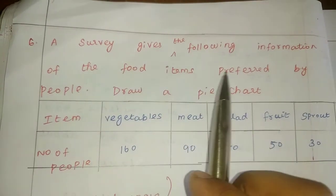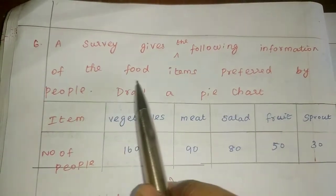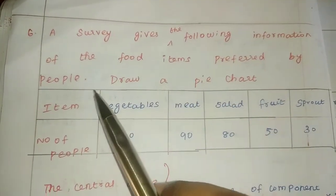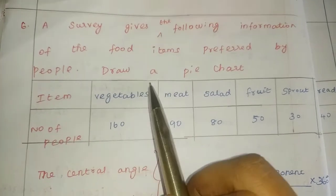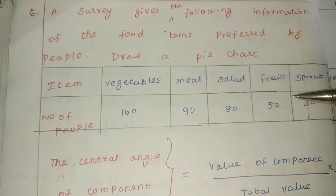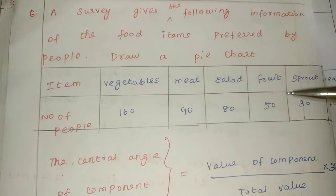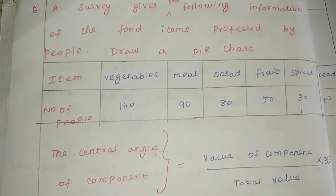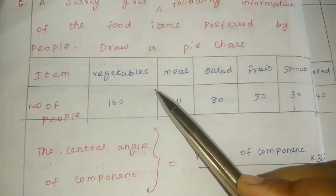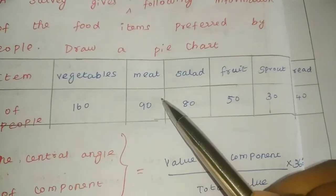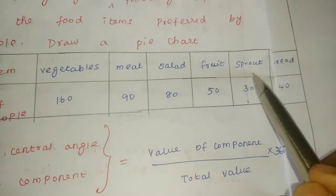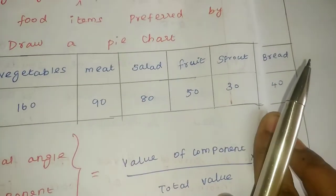A survey gives the following information of the food items preferred by the people. We need to draw a pie chart. The items are: Vegetable, Meat, Salad, Fruit, Sprouts, and Bread.